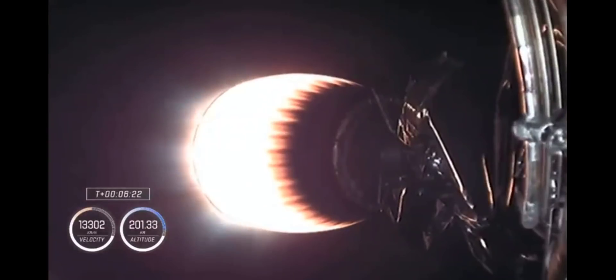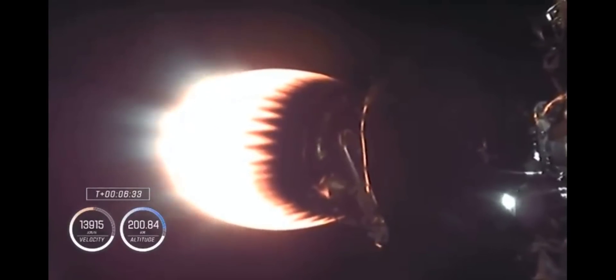Trajectory still nominal. And you can see on the indicator altitude, 201 kilometers. We're now beginning to essentially level out and pick up velocity to get us into low Earth orbit.